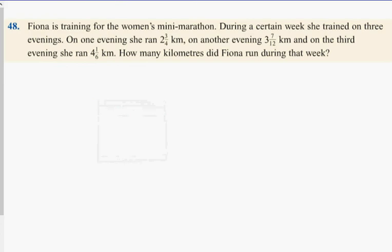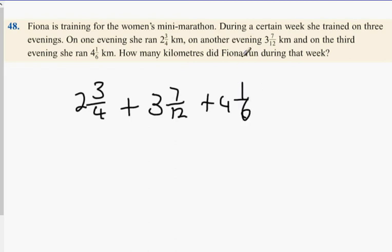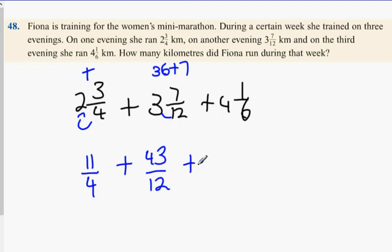Now, this one here. Fiona is training for a women's mini-marathon. During a certain week, she trained for three evenings. On the first evening, she ran 2 and 3/4. Another evening, she ran 3 and 7/12. On the third evening, she ran 4 and 1/6. How many kilometers did Fiona run during that week? Well, first of all, you have to do one at the top heavy. And what you get? So that is 8 plus 3 is 11 over 4. And then plus 3 times 12 is 36 plus 7 is 43 over 12. And finally 4 times 6 is 24 plus 1 is 25 over 6.